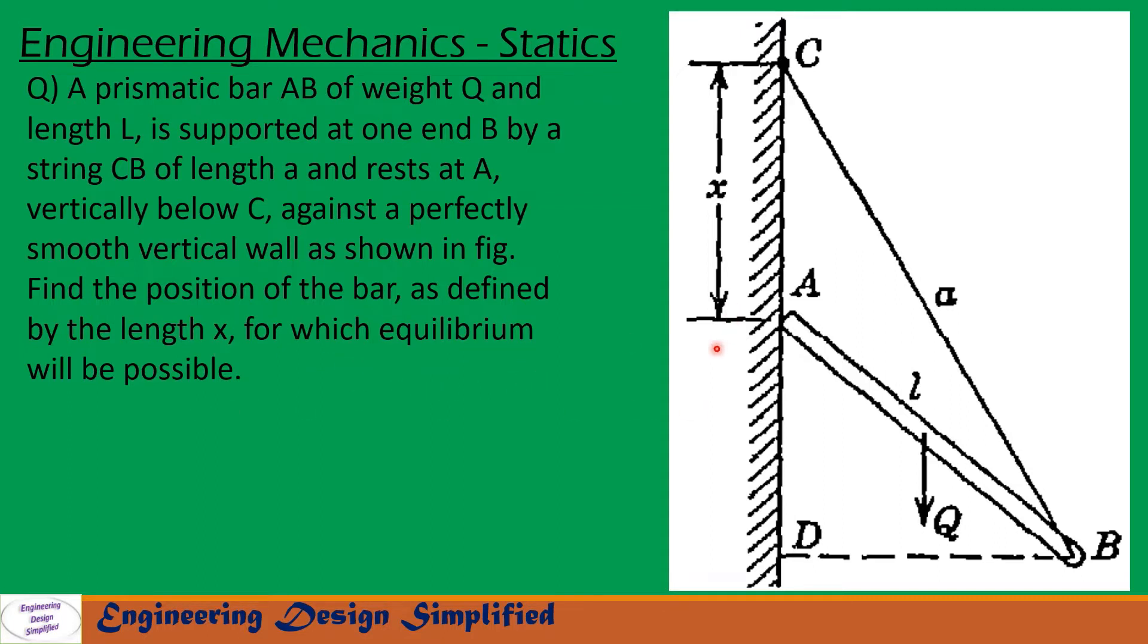In this problem, given is a prismatic bar AB as shown in figure. At one end, there is a string attached with length A, the bar has length L and weight Q, and this distance is X. One end of this prismatic bar is resting on this smooth vertical wall and here this is hinged to this string. For this arrangement to be in equilibrium, we need to find expression between X, L and A. Let us see in the coming slides how to solve this problem.